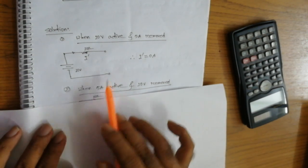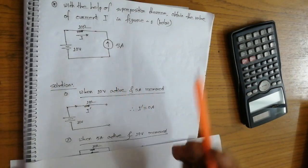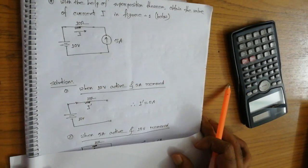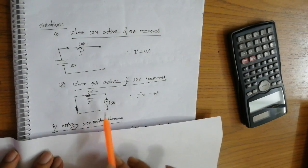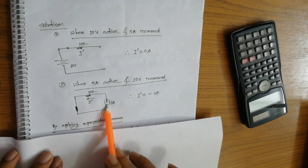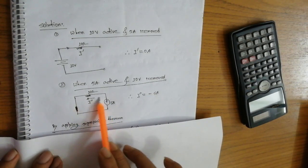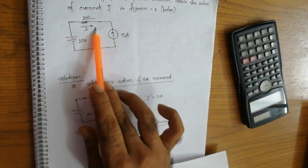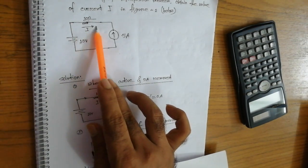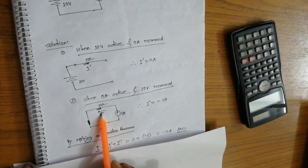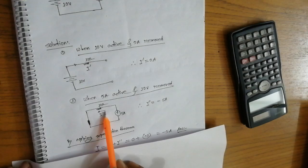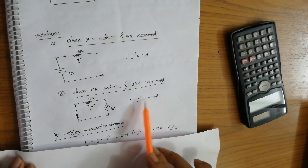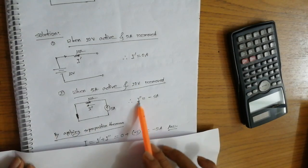Now for step two: the 5A current source is active and the voltage source is turned off, meaning it is replaced by a short circuit. The current flow through the circuit is analyzed, and i double prime equals minus 5A.